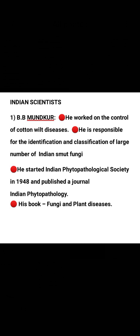Now we discuss Indian scientists in the history of plant pathology. B.B. Mundkur was a most important scientist who worked on control of cotton wilt disease and was responsible for identification and classification of a large number of Indian smut fungi, such as Ustilago segetum tritici, which causes loose smut in wheat. He started the Indian Phytopathological Society in 1948, published the journal Indian Phytopathology, and his most important book is Fungi and Plant Disease.